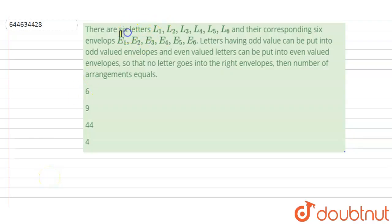The question says that there are six letters L1, L2, L3, L4, L5, L6 and there are corresponding six envelopes that are represented by E1, E2, E3, E4, E5, E6. The question says that letters having odd value, that is L1, L3, L5.